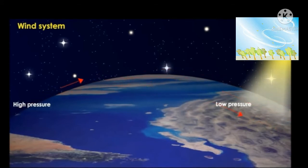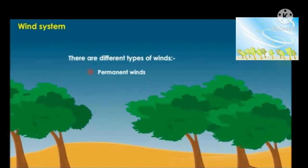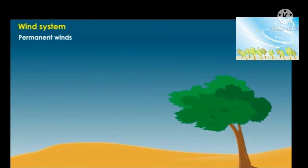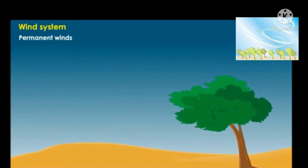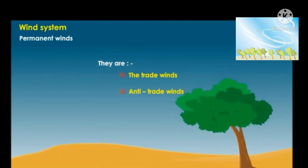Wind system: due to horizontal differences in air pressure, air flows from areas of high pressure to areas of low pressure — this movement of air is known as wind. A wind is named after the direction from which it blows. For example, the wind blowing from the west is called westerly. There are different types of winds: first, permanent winds; second, periodic winds; and third, local winds.